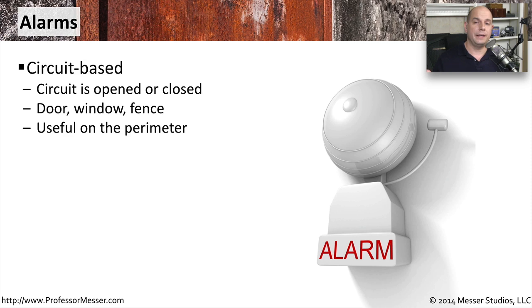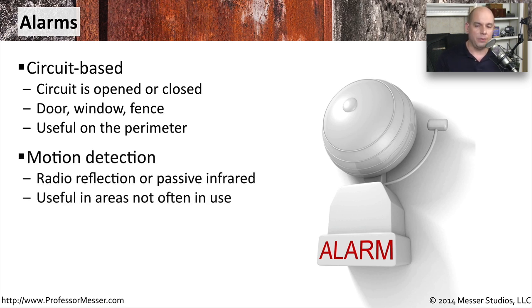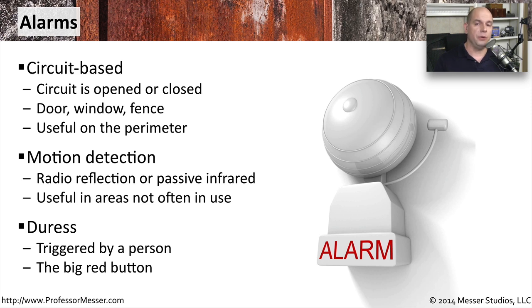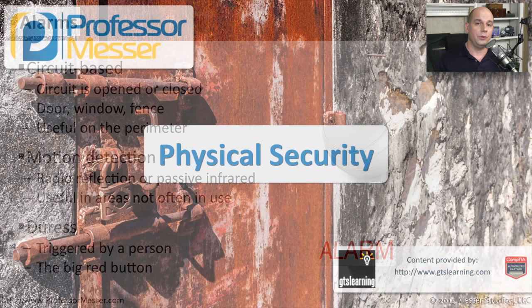If something is ever out of the ordinary, you want an alarm triggered. Some alarms are circuit-based — a circuit is opened or closed, as on a door or window, and a notice or alarm is sent to a central location when that happens. This is useful at a perimeter to detect when someone enters through a door or window. Motion detection alarms look for radio or infrared reflections and notify a central location if motion is detected in an unexpected area. A duress alarm is triggered by a person — such as pushing a big red button in a fire or panic situation — to notify a third party. All of these physical security techniques work together to keep resources and people in your organization safe.